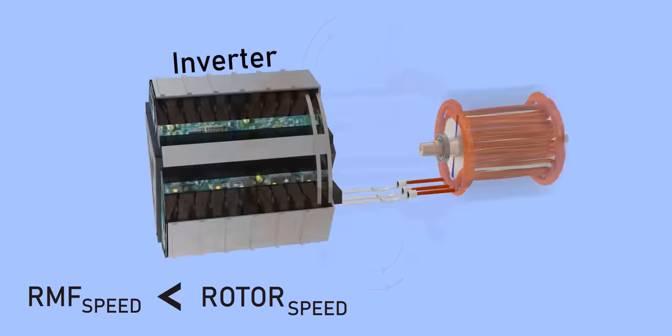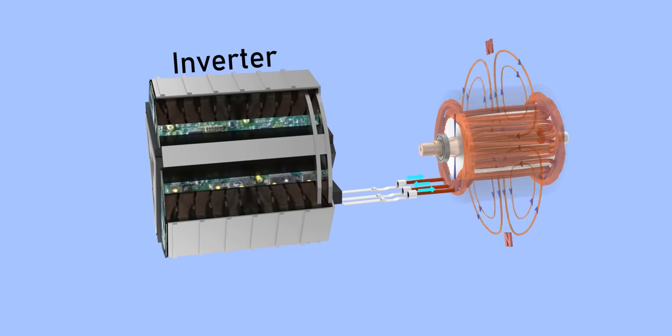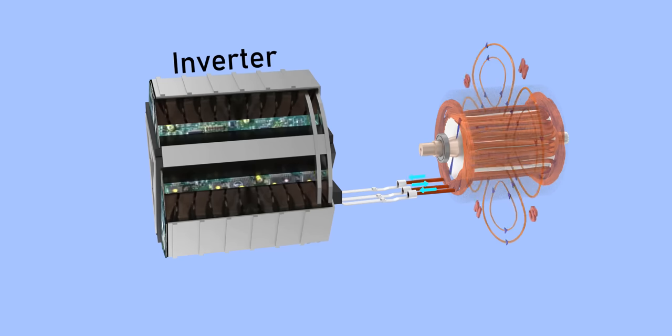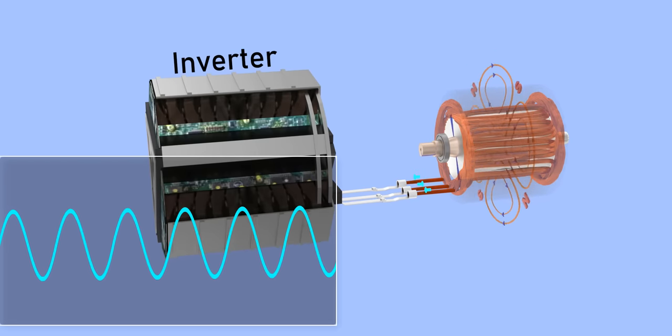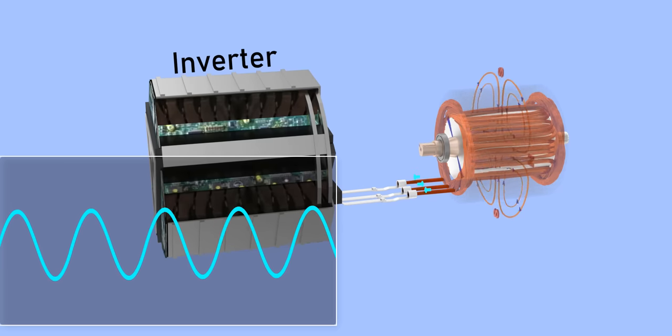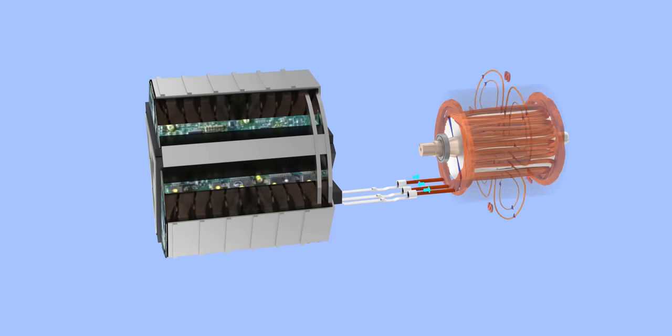Here comes the role of the inverter. The inverter will continuously be fed with the instant speed of the rotor. The clever inverter adjusts the frequency of the alternating current it produces and keeps the RMF speed lower than the rotor speed. As the rotor speed reduces, the RMF speed is further reduced.